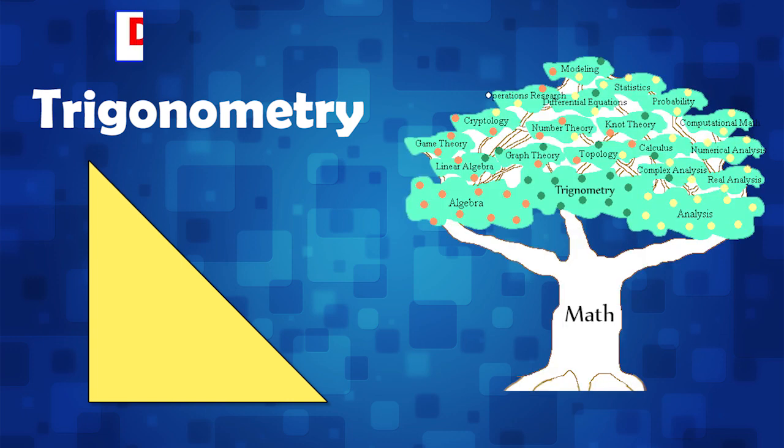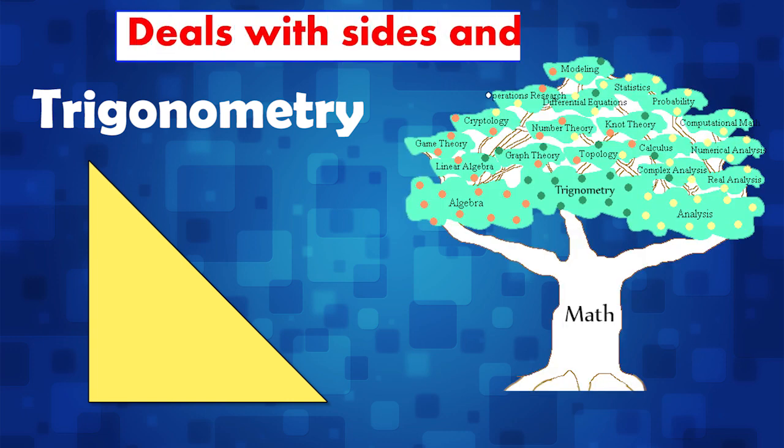Trigonometry is a branch of mathematics which deals with the study of lengths of sides and angles of a triangle.